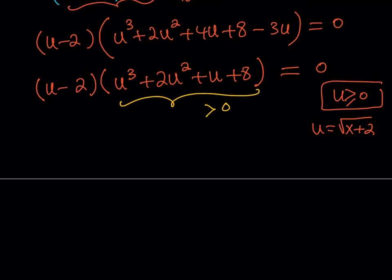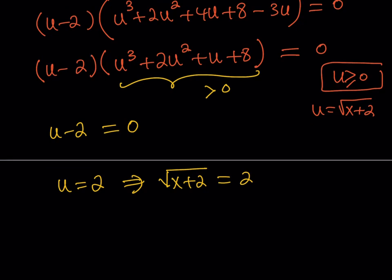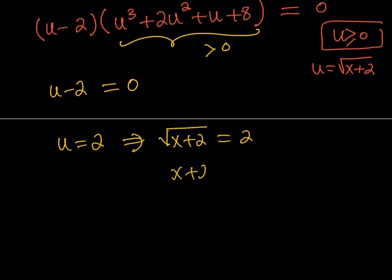So what is that supposed to mean? We don't really get any real solutions from there. So what we get is the only one that comes from u minus 2 equals 0, which means u is equal to 2. But we said that u is the square root of x plus 2. So square root of x plus 2 is equal to 2. If you square both sides, you get x plus 2 is equal to 4. And from here, you get x equals 2. So that's going to be the only real solution to our equation. And that's basically a good point to stop.